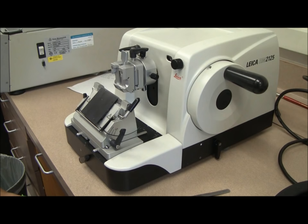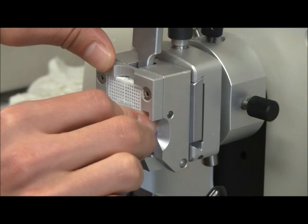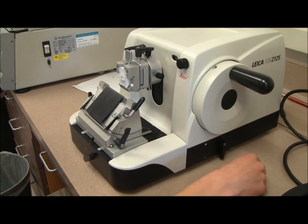We'll do a quick run through of the basic operations and then demonstrate how to cut sections from an eye and get them onto slides. Use this lever to secure your tissue block to the specimen clamp.